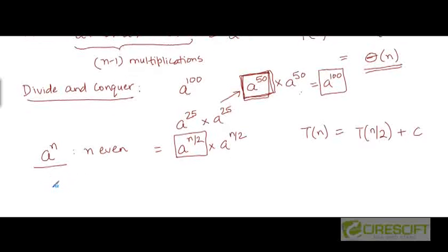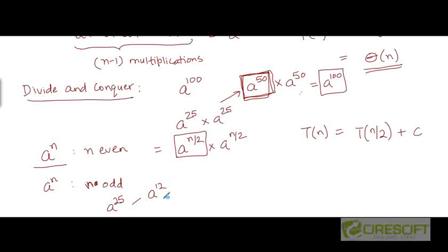What if n is odd? For example, how would we solve for a to the power 25? We can't cleanly divide this into two sub-problems each of the same size. So let's divide it approximately into two sub-problems: one sub-problem could be a to the power 12, the other could be a to the power 13. Now if we know the solution to a to the power 12, we can directly get a to the power 13 — we can just multiply a to the power 12 with a.